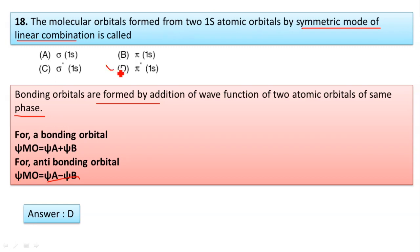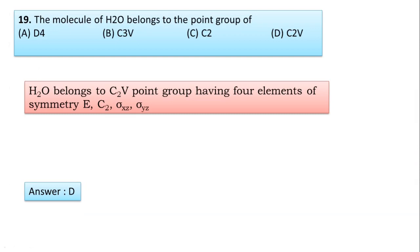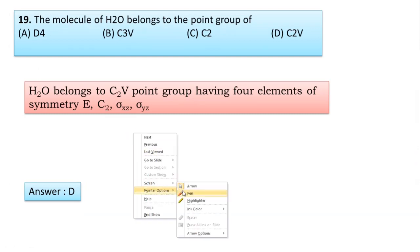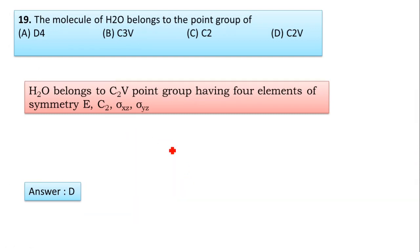Next question 19: The molecule of H₂O belongs to which point group? It is a C₂ᵥ point group. You all know that water belongs to C₂ᵥ point group. Here, the elements of symmetry are E, C₂, σₓz, and σyz—one axis of symmetry and two planes of symmetry. So answer D is correct.